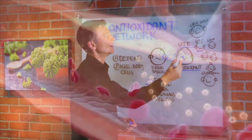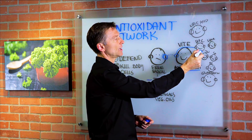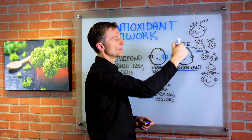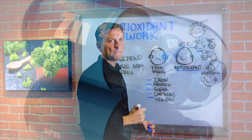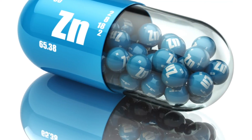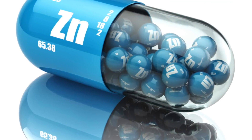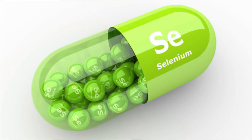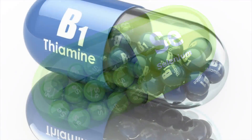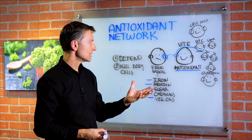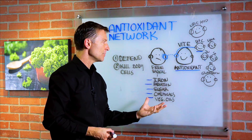Vitamin C will become unstable and can borrow electrons from other antioxidants. You have zinc involved as an antioxidant — it's really good at lowering inflammation — and selenium. Vitamin B1 can also act as an antioxidant and it protects cells against damage.